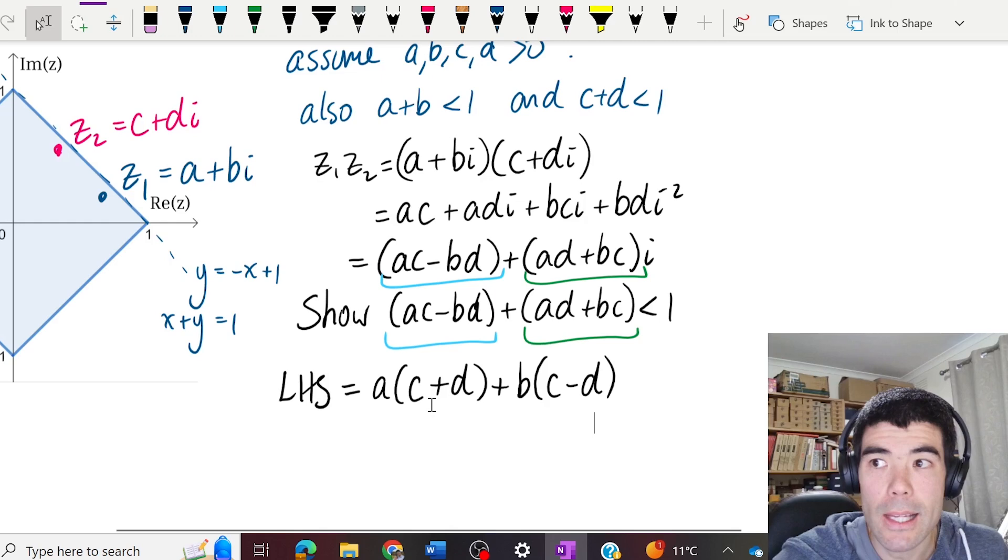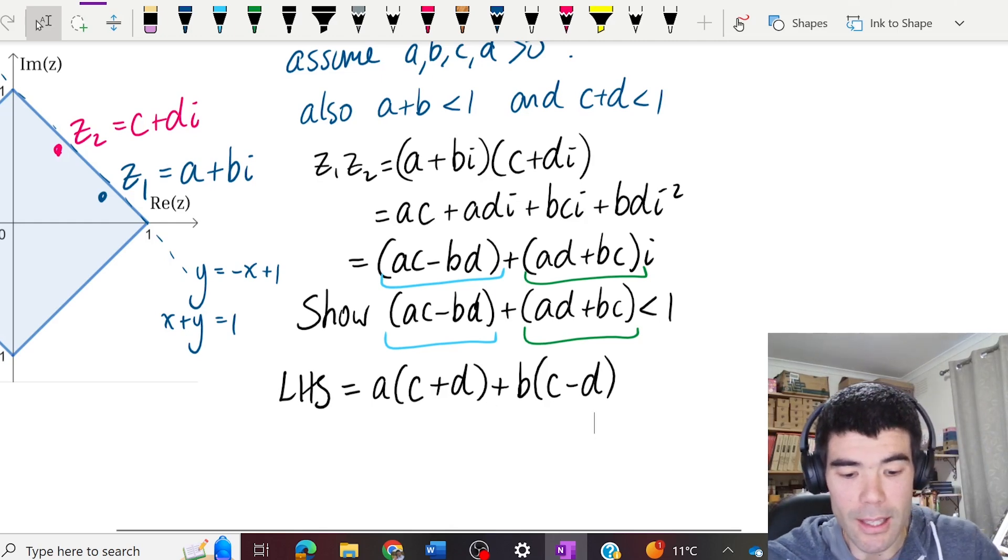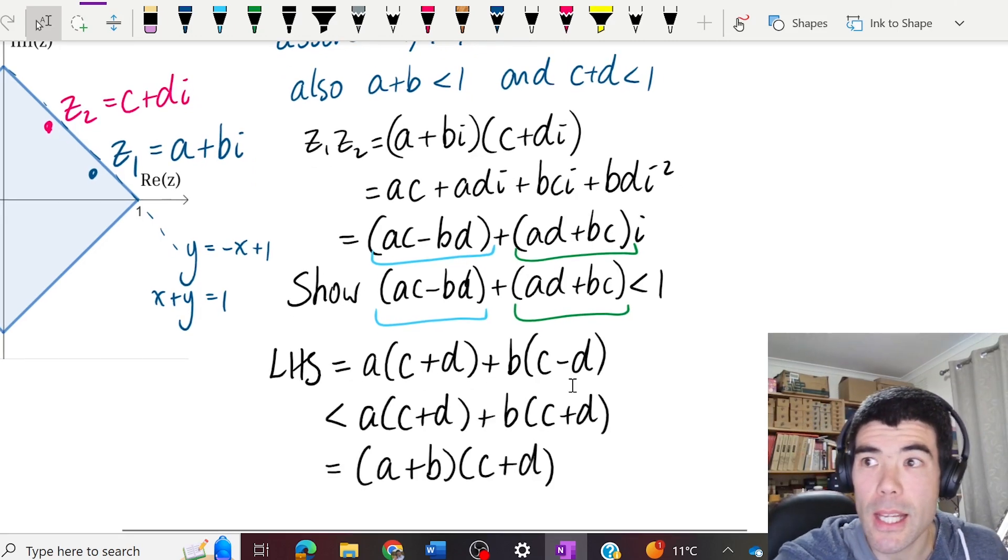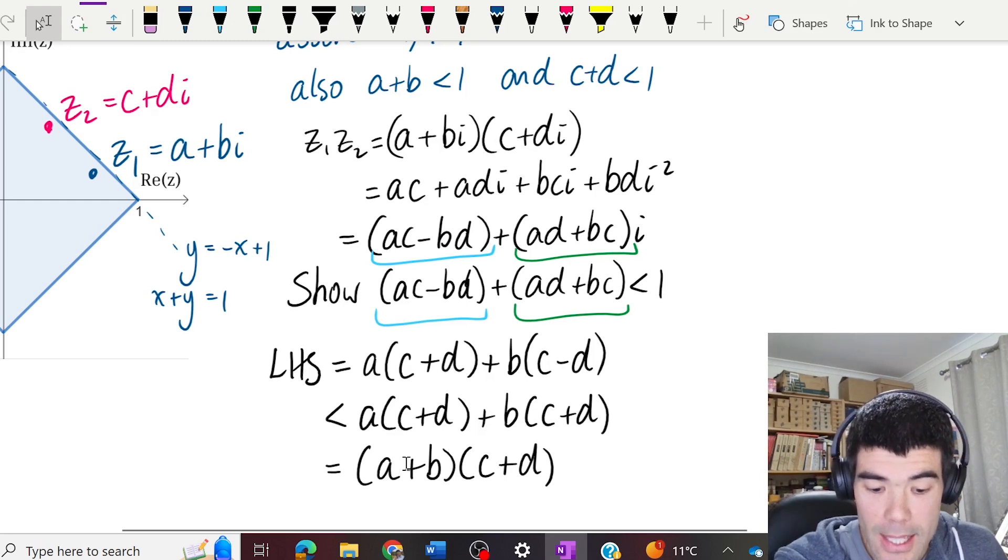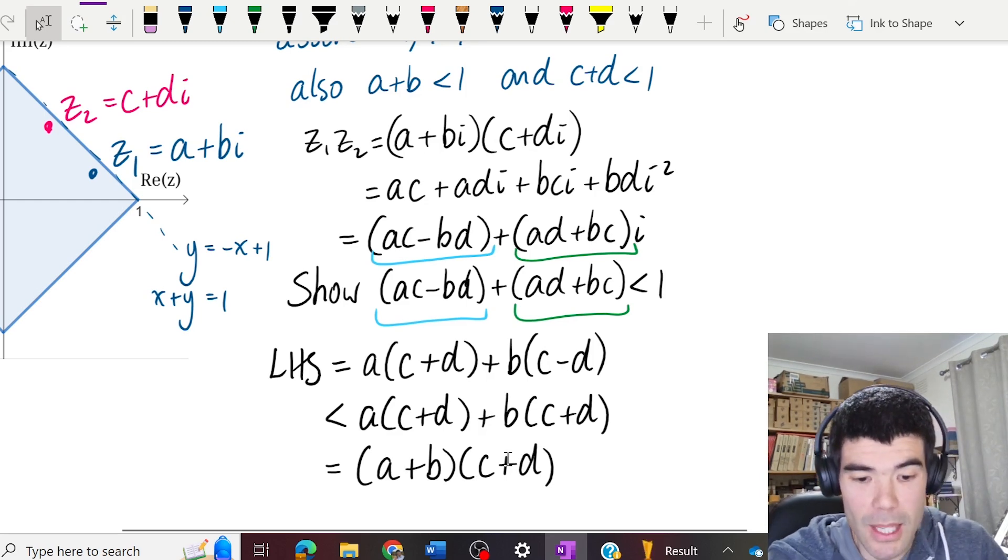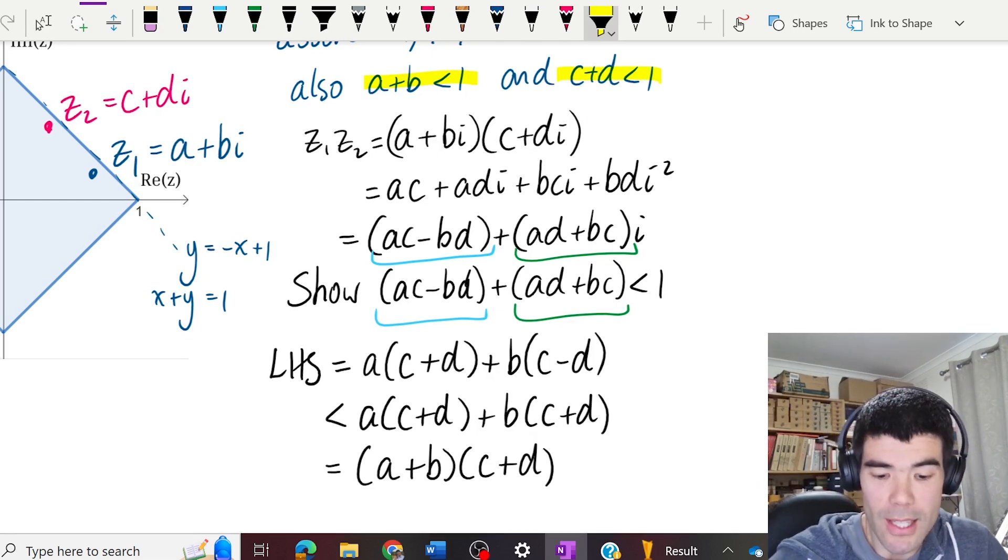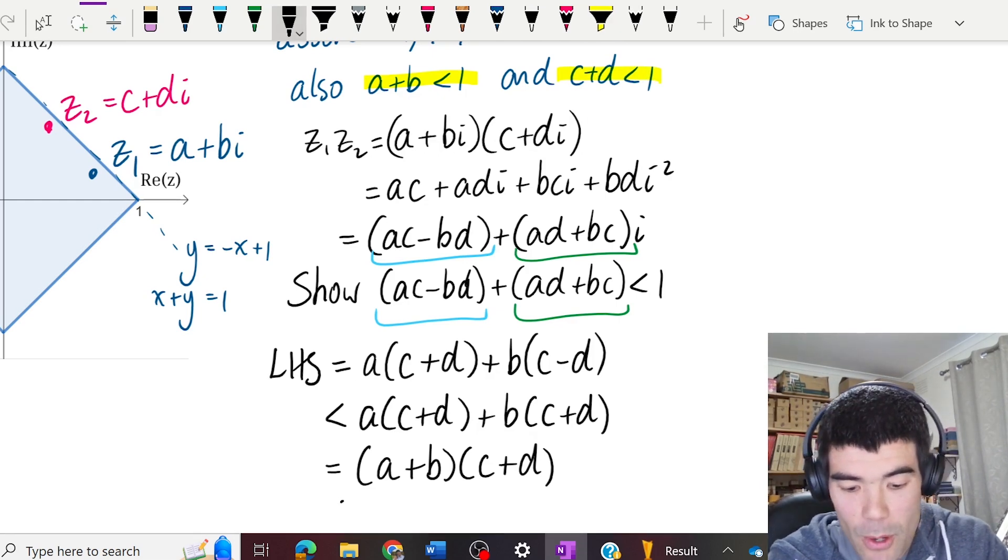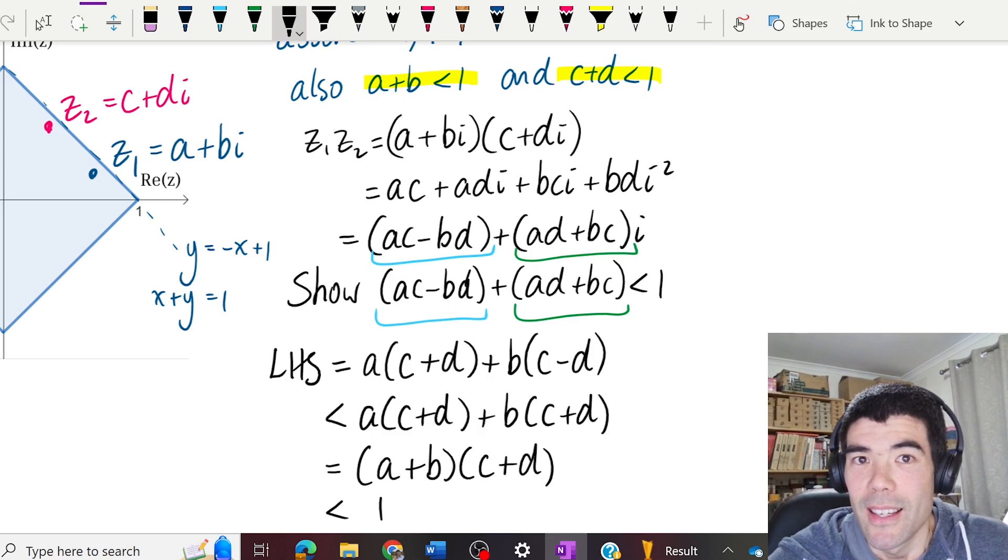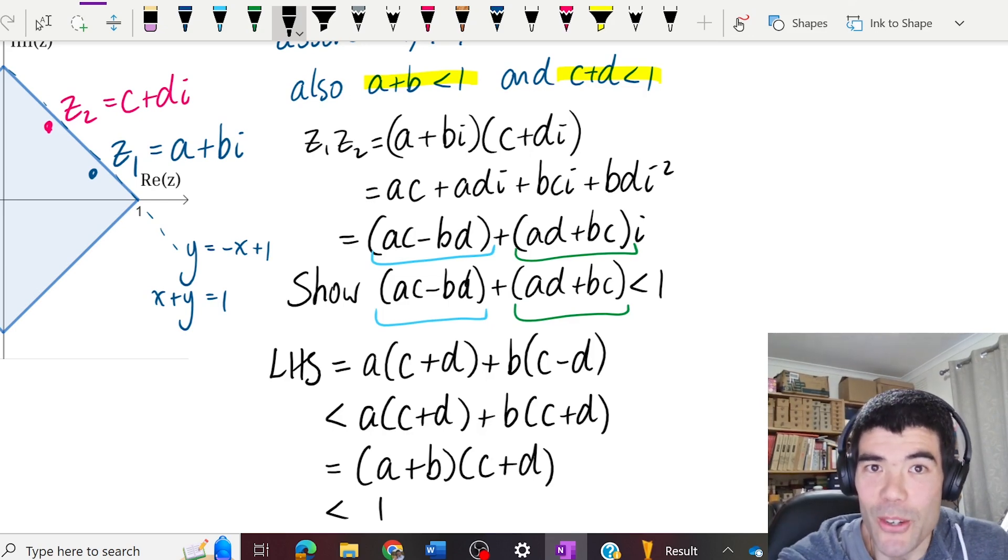And if we look at this, well, c minus d, we know that has to be less than c plus d, because c and d are both positive here. So we can group our terms and factorize and say this is less than (a plus b) times (c plus d). And we already assumed that these were both less than one. So therefore, the product must also be less than one. Pretty good, right?